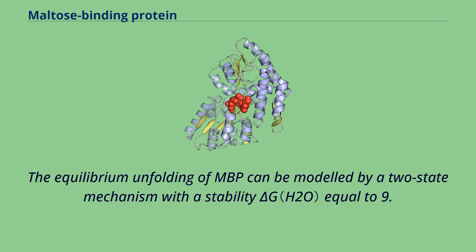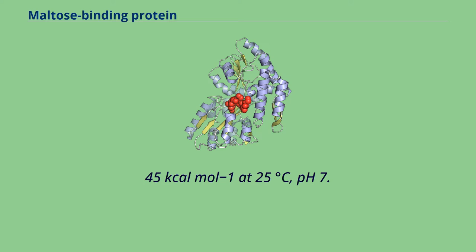The equilibrium unfolding of MBP can be modeled by a two-state mechanism with a stability ΔG equal to 9.45 kcal/mol at 25 degrees Celsius, pH 7.6.